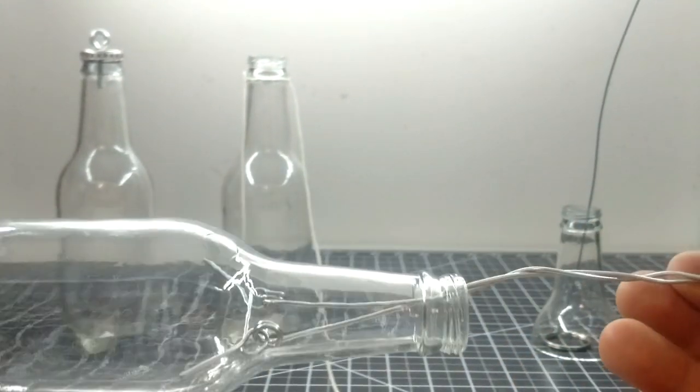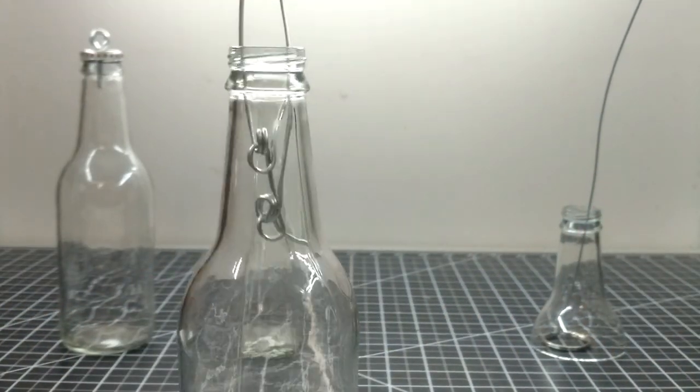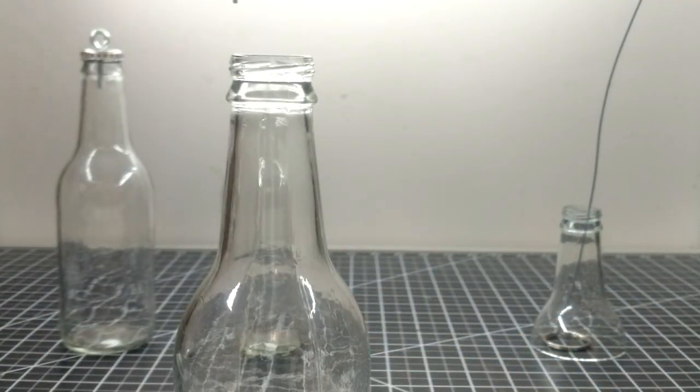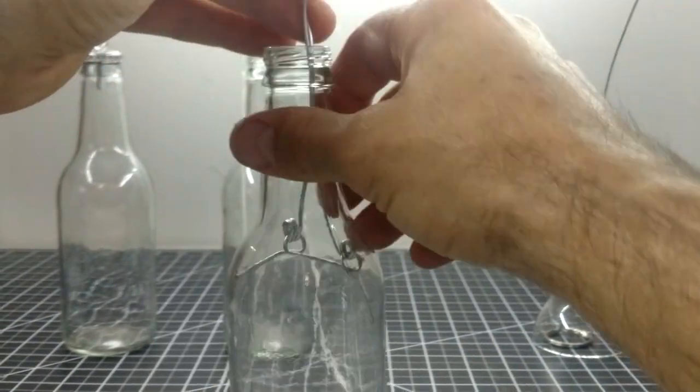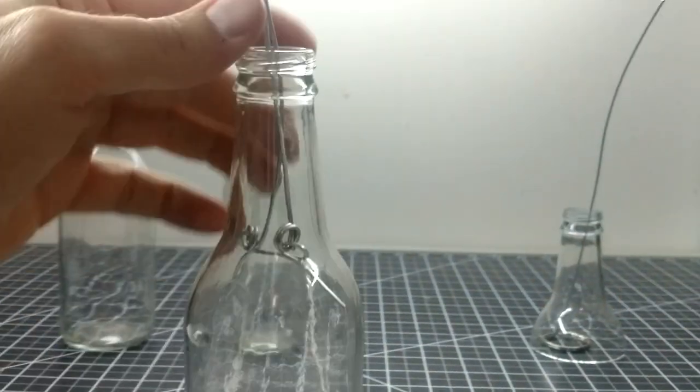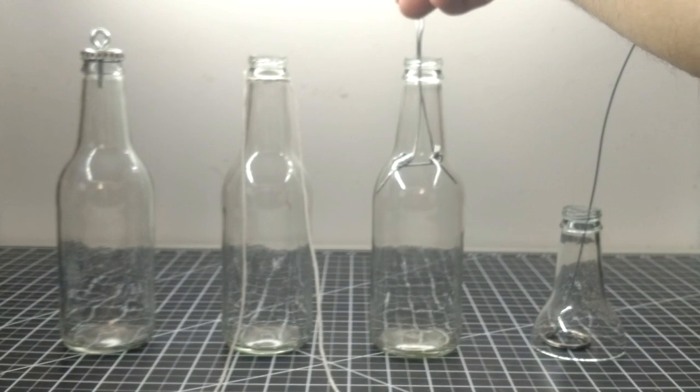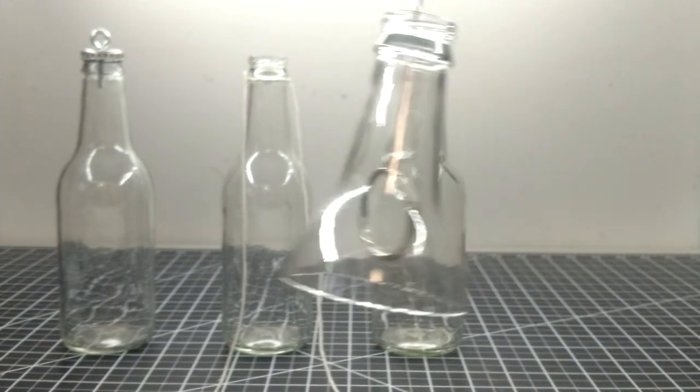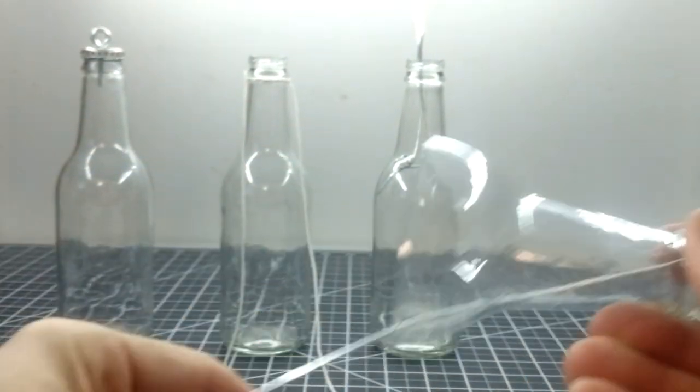If the bottle doesn't have that ridge, or if you have a dark bottle and just want to hide the support on the inside, you can build this wire bridge for it. If you have access to the inside of the bottle, just use a keyring.